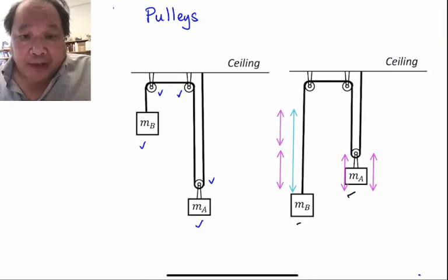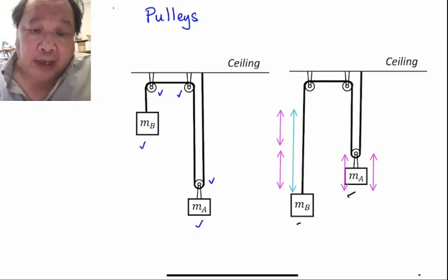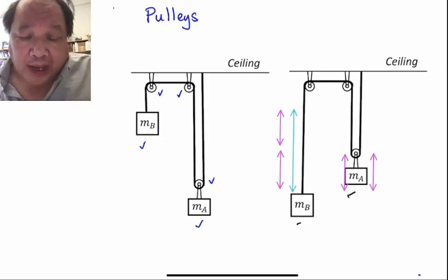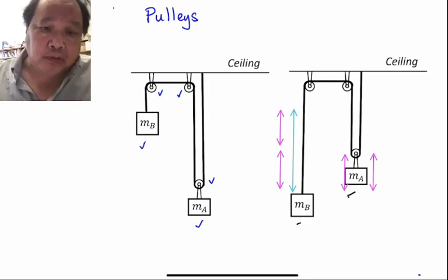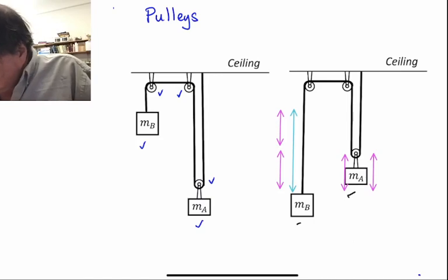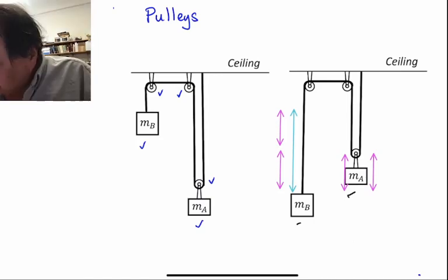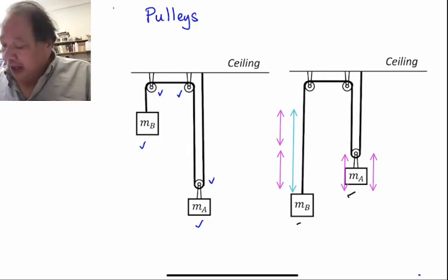And that means that mass A is moving one half the distance up of mass B. If it's moving one half the distance up, it's accelerating at one half the rate.